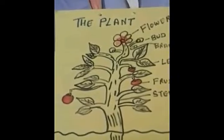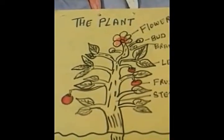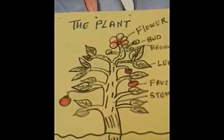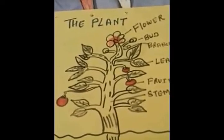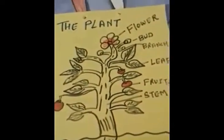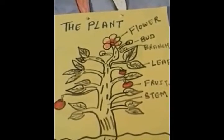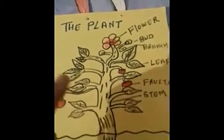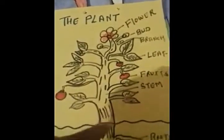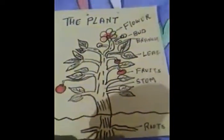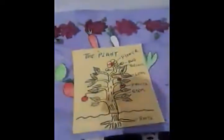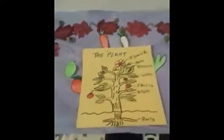These all are the parts of the plant. I hope you all have understood what are the parts of a plant. So one more time we can recall: flower, bud, branch, leaf, fruit, stem, and roots — these are the parts of the plant.